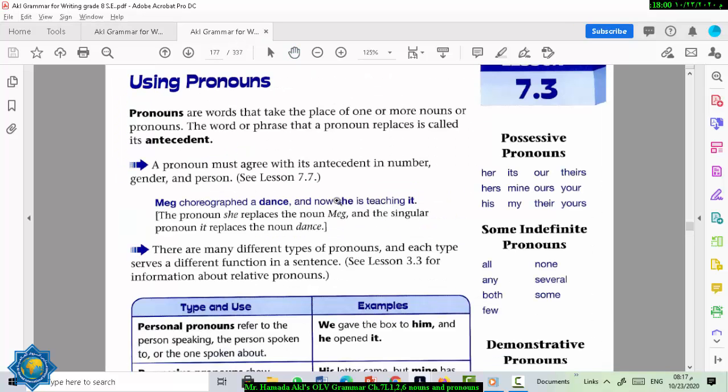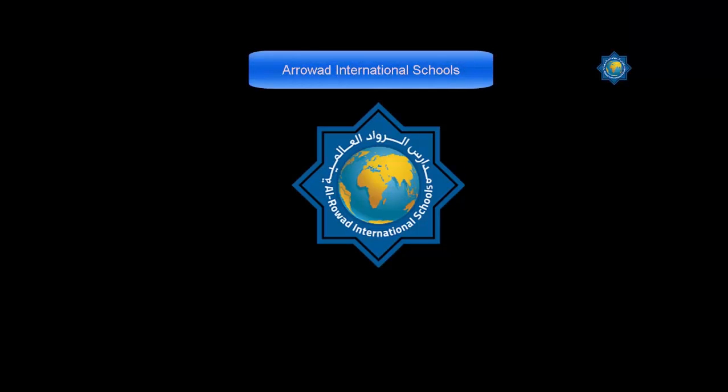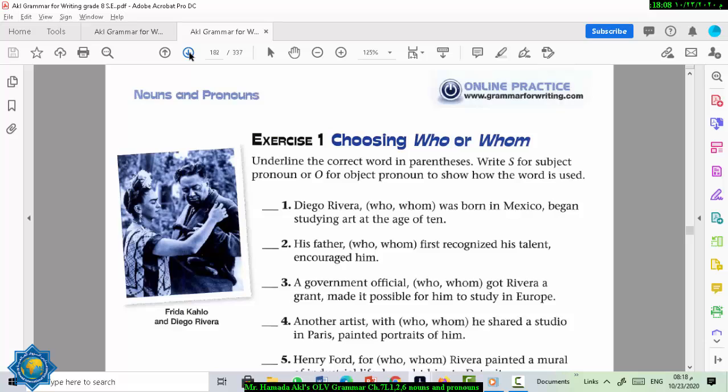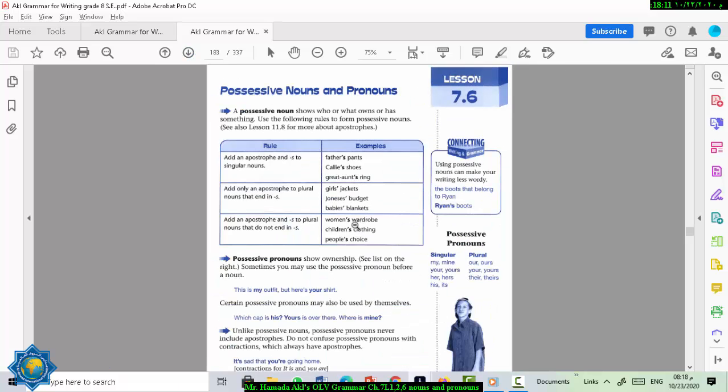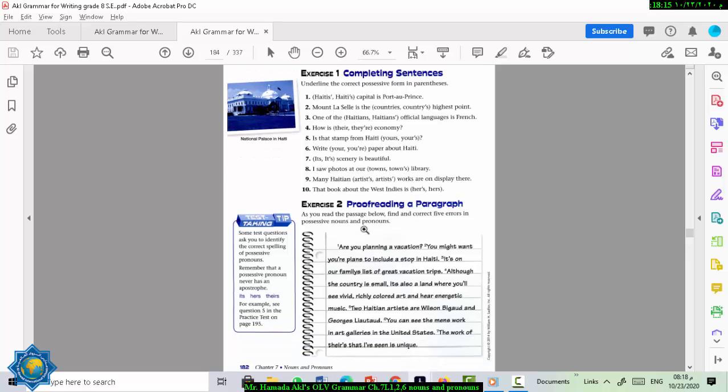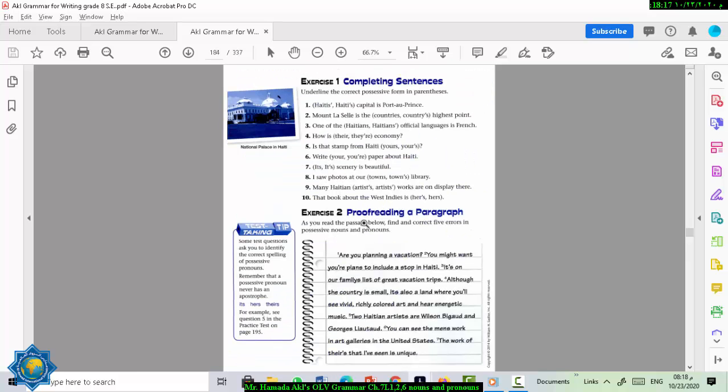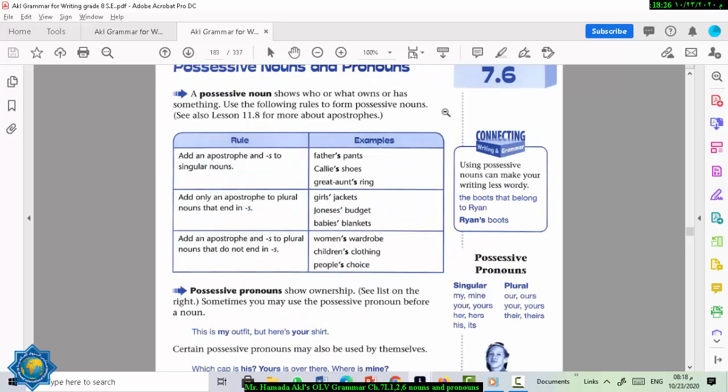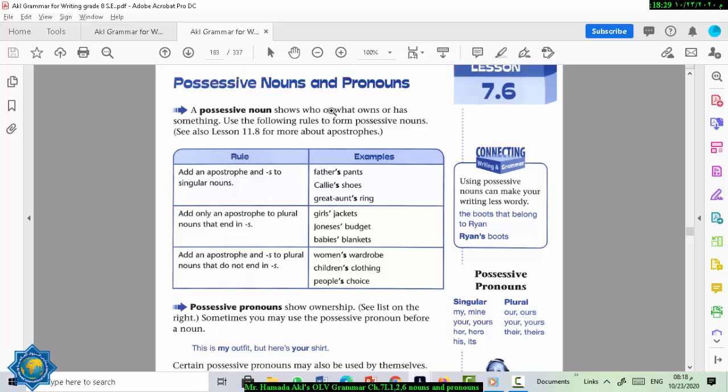Now let's go to the last lesson in this week's agenda. It's 7.6. That is page 181. Page 181, possessive nouns and pronouns. A possessive noun shows who or what owns or has something. Use the following rules to form possessive nouns. That's the rule. And here's the example.